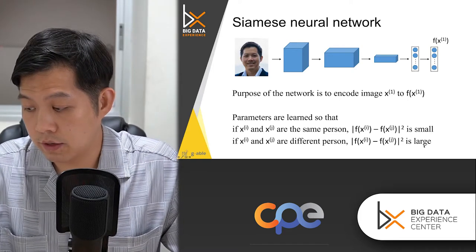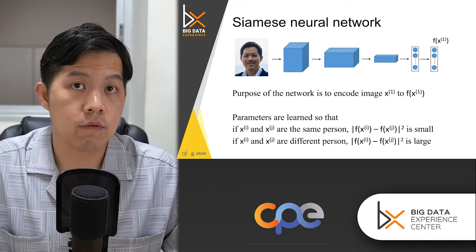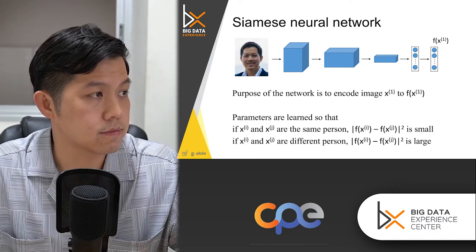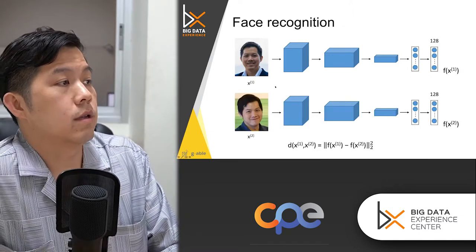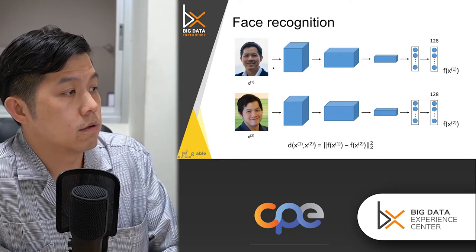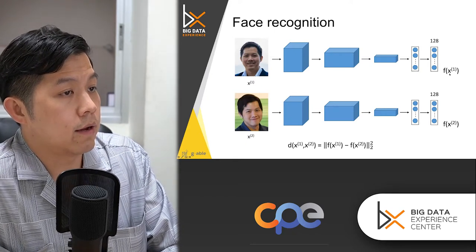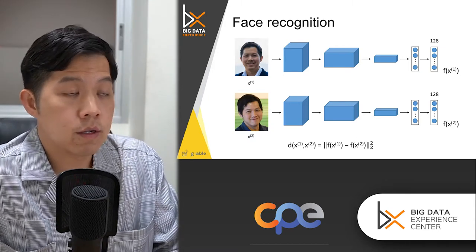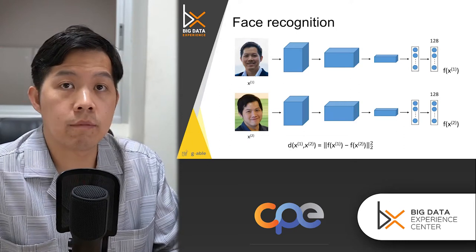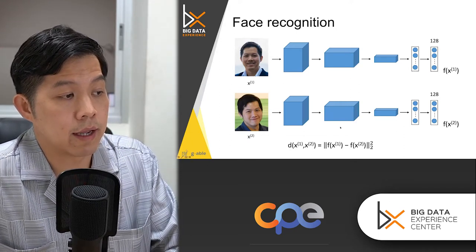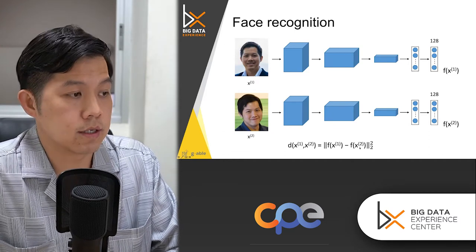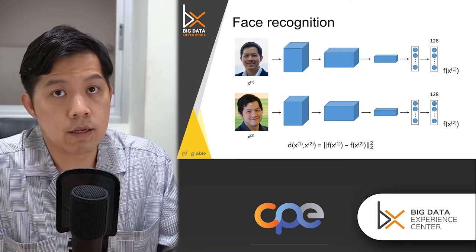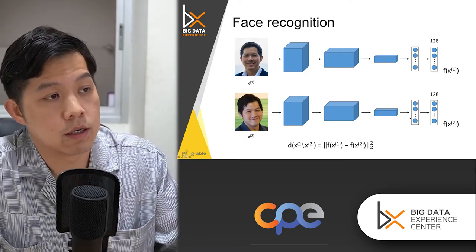The Siamese neural net allows you to detect whether inputs come from the same person. If they are from the same person, FX1 and FX2 should be small. 'Small' can be measured by different distance comparisons — for example, the squared distance as norm, the square of norm, or the absolute norm — as long as it compares the distance between the two vectors.